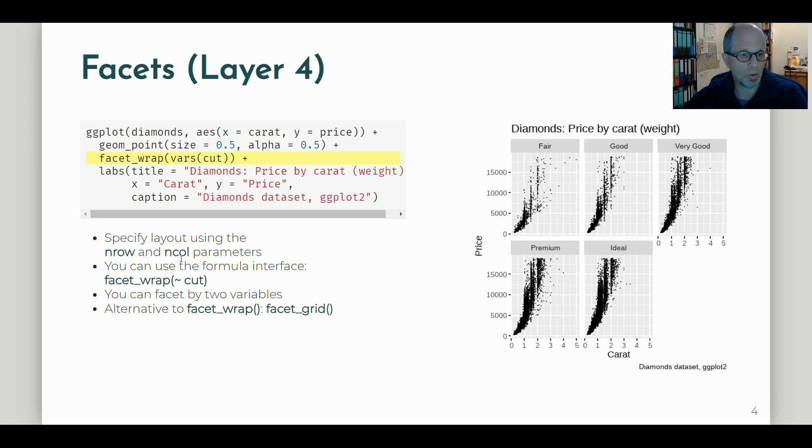Alternatively you can use the formula interface using the tilde notation that you may know from statistical models. You can also facet by more than one variable, and an alternative to the facet_wrap function that I show here in the code is the facet_grid function that enables you to specify a grid of x and y coordinates. So two variables.